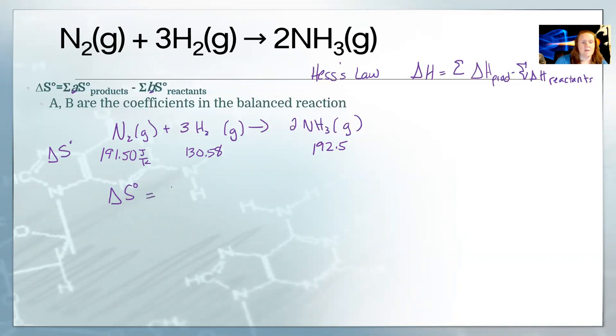So our overall delta S is going to be products. So two times the value for each ammonia minus the reactants. So it's 130.58 times three plus 191.5. I can't tell you how frequently people mess up these signs. And the only way I know to make sure you don't is to use a lot of brackets. That helps to avoid dropping the negative sign. And also go step by step. Don't just skip around.